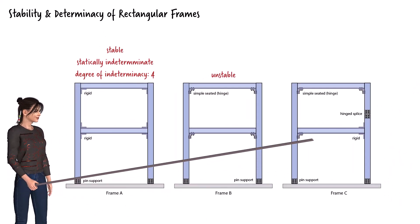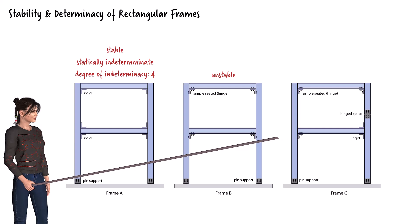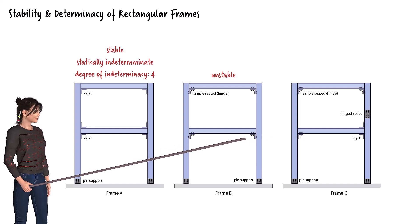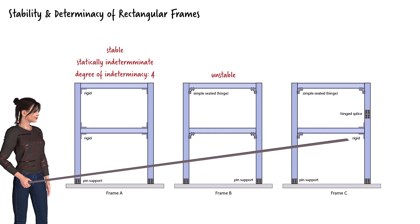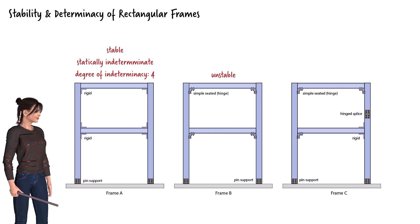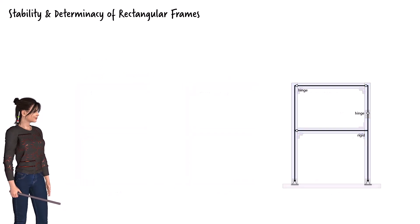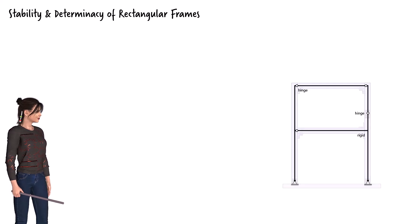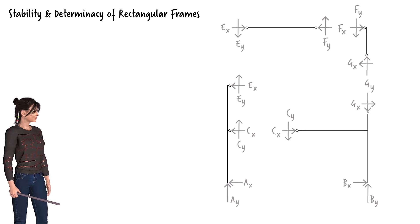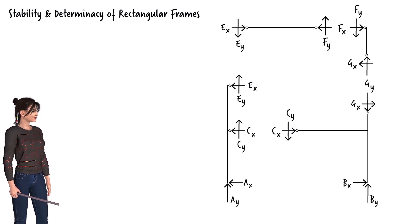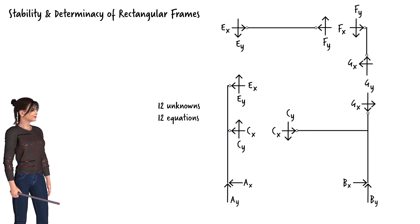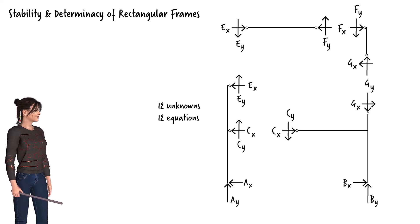Now let's take a closer look at frame C. This frame is almost identical to frame B, but with one key difference: the hinge at the right end of the lower beam has been moved to the middle of the upper right column. This means we now have a rigid connection at the beam end and a hinge in the column. To determine if this structure is stable, we break it into four segments. Each hinge gives us two unknown forces and each support gives us two reaction forces, adding up to 12 unknowns in total. Since we have four segments, we get 12 equations.